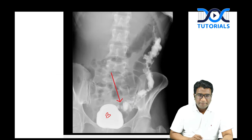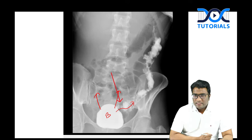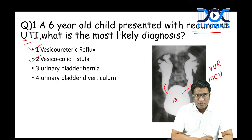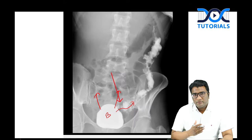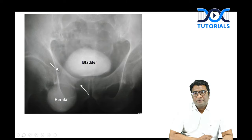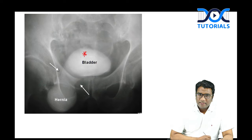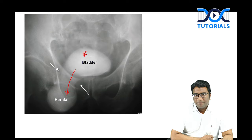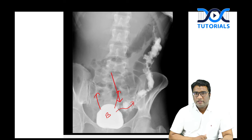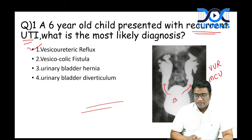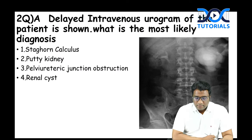In vesico-colic fistula, contrast from the bladder enters the sigmoid or adjacent colon. Another image showed a contrast-opacified bladder with outpouching into the inguinal area — that is bladder hernia. Remember these image patterns: bladder hernia, vesico-colic fistula, bladder diverticulum, and high-grade vesico-ureteric reflux are all different appearances on cystography.